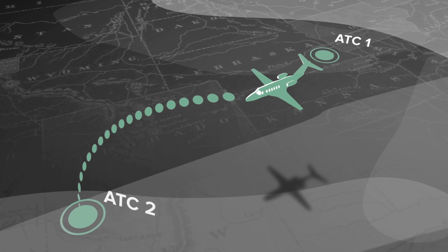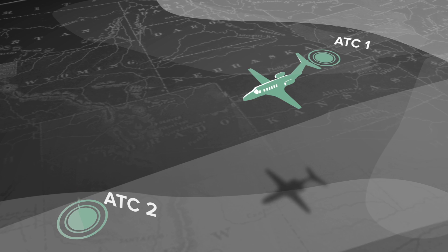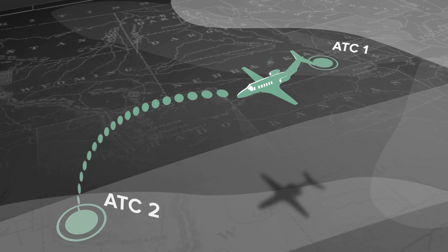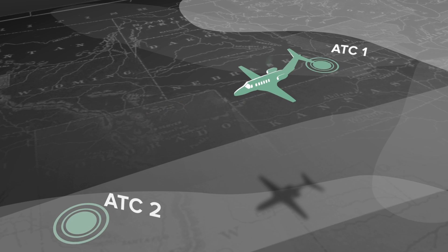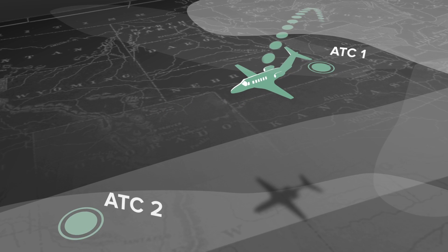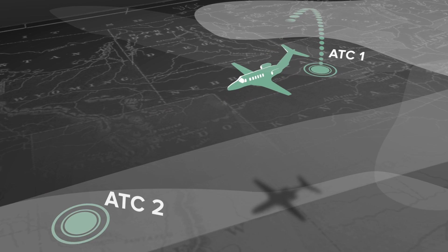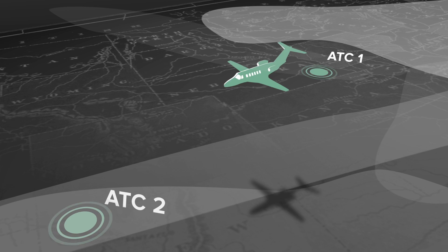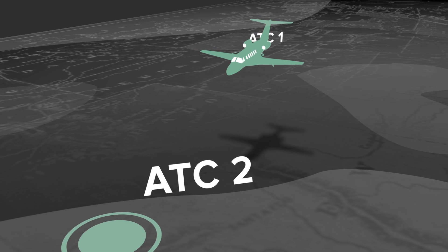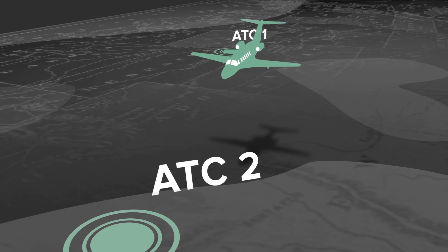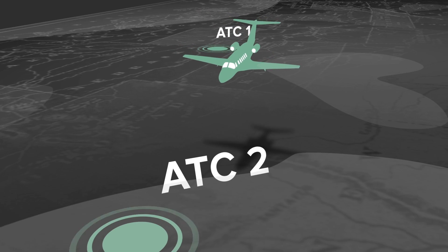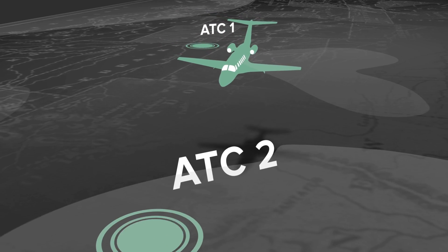The next air traffic controller will send an acknowledgement message back to the aircraft, and the aircraft will send an acknowledgement back to the original air traffic control center. The aircraft has officially been handed off to the next data authority. All this happens without any pilot interaction whatsoever.